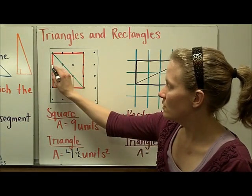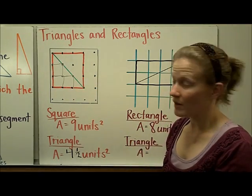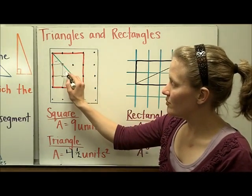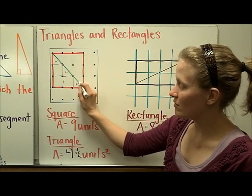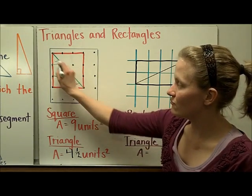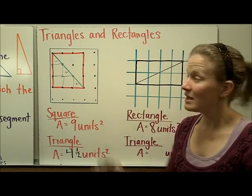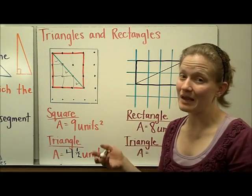Here would be one, two, three full square units. This half one plus this half one would make four. And then there's a half of a square unit right there. So one, two, three, four and a half square units. And this triangle up here would have the exact same area.